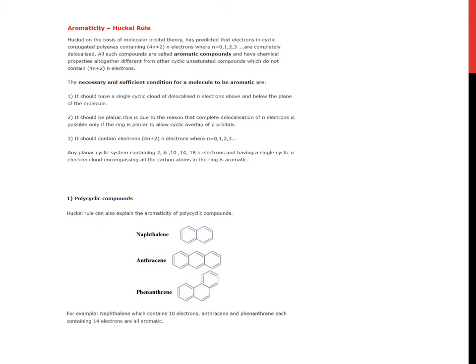Necessary conditions for a molecule to be aromatic are: number one, it should have a single cyclic cloud of delocalized pi electrons above and below the plane of the molecule. Second point, it should be planar. This is due to the reason that complete delocalization of pi electrons is possible only if the ring is planar to show cyclic overlap of p orbitals.